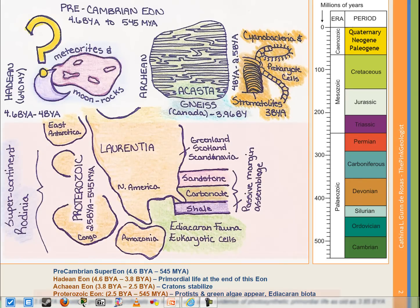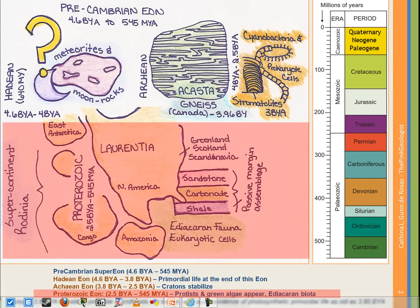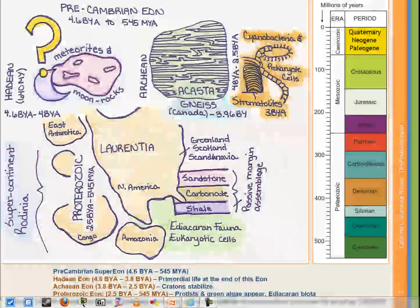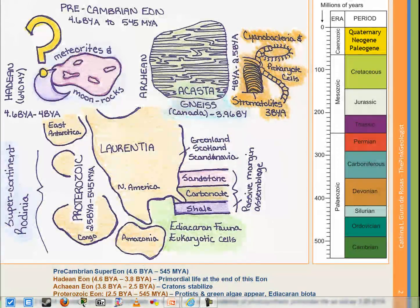Then we go on to the Proterozoic Eon. It was originally named Proterozoic because they thought that was where the first evidence of primordial life was to be found. However, as we've seen, we've since updated that. The Proterozoic goes from about 2.5 billion years ago — and I don't want it to be lost on people how many years a billion really is — to 545 million years ago.